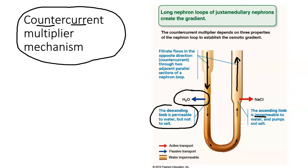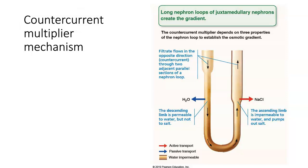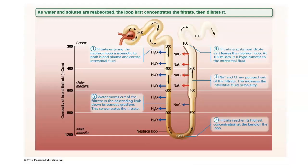In the ascending limb, there is no water being reabsorbed, but we're using active transport — we're using energy to reabsorb sodium. We know that 70% of the sodium was reabsorbed in the proximal convoluted tubule, and here's an additional amount of sodium that we're going to use energy to extract out of the filtrate.